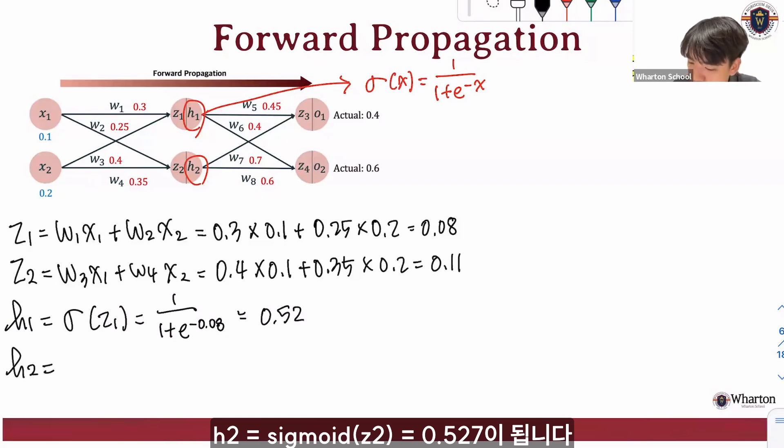And for h2, we have sigmoid of z2, which is 1 over 1 plus e to the negative 0.11, which is 0.527.